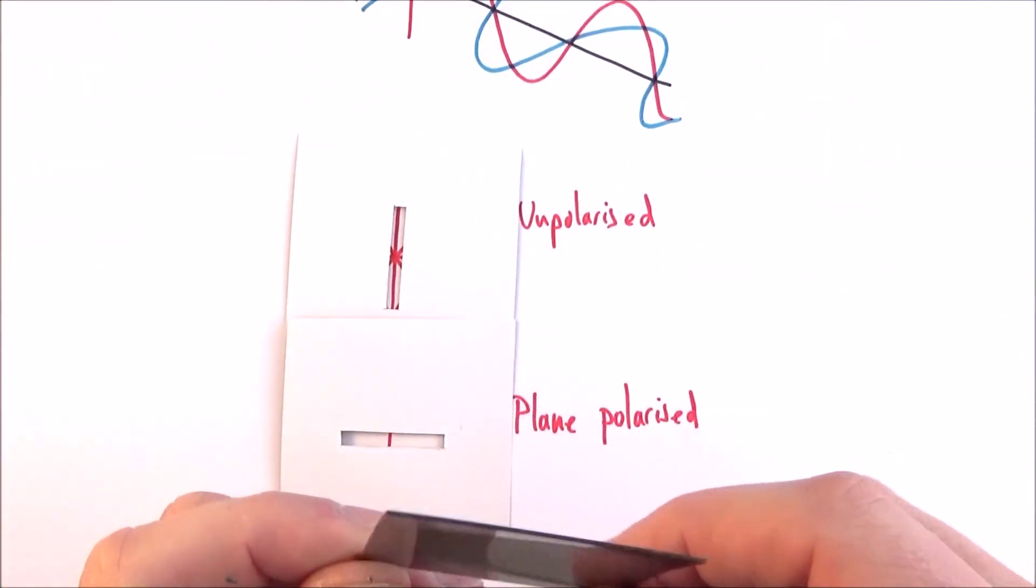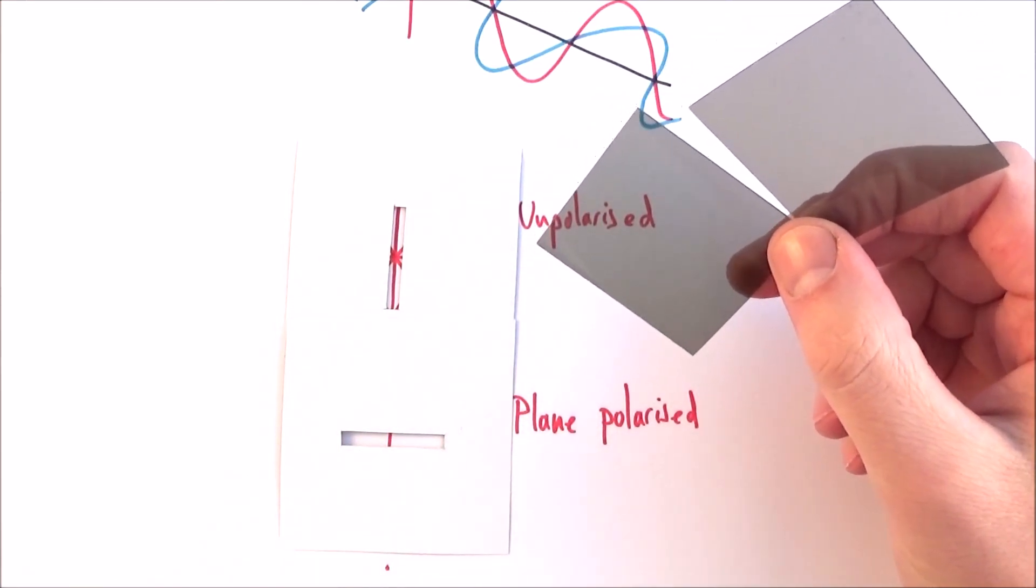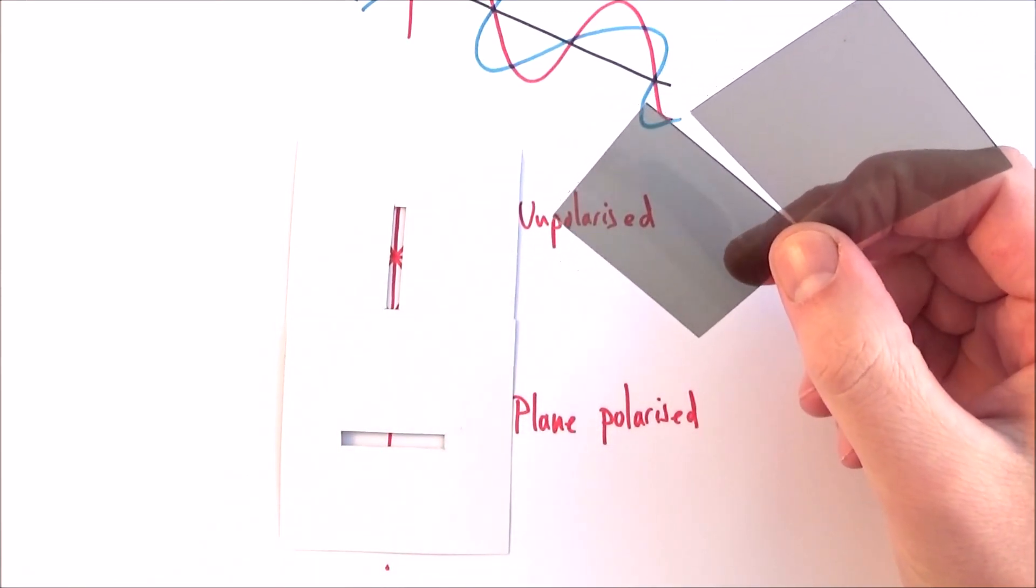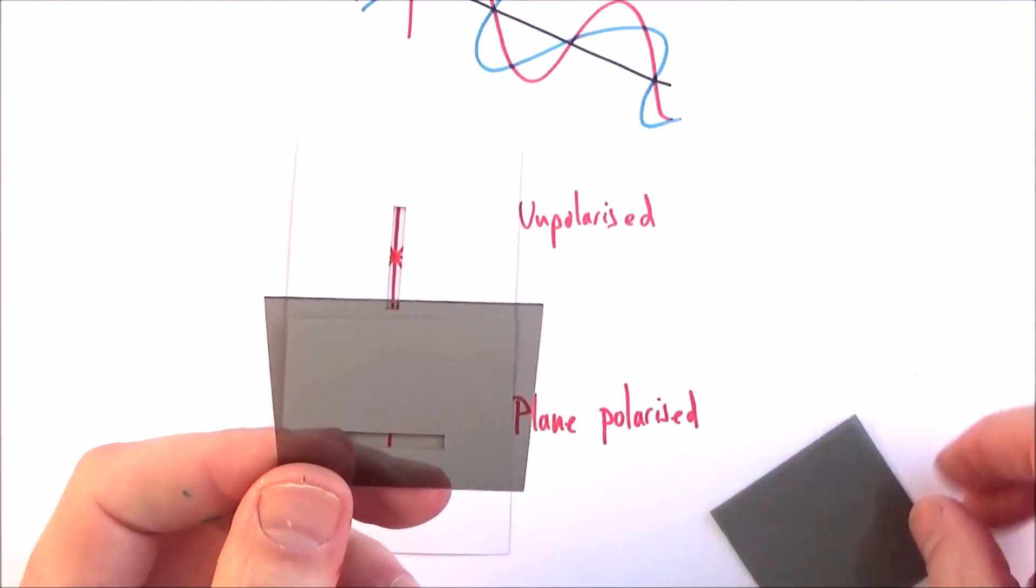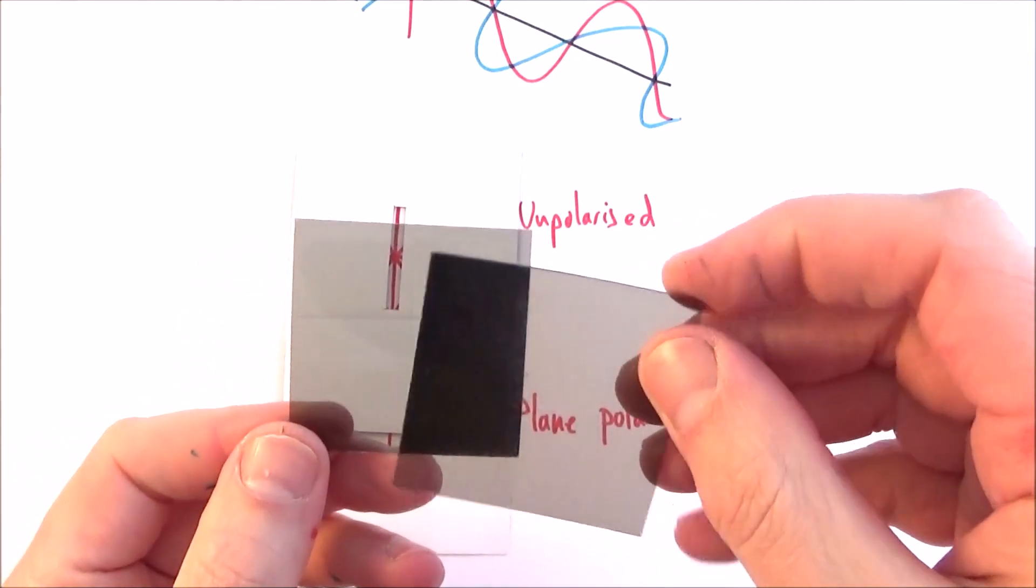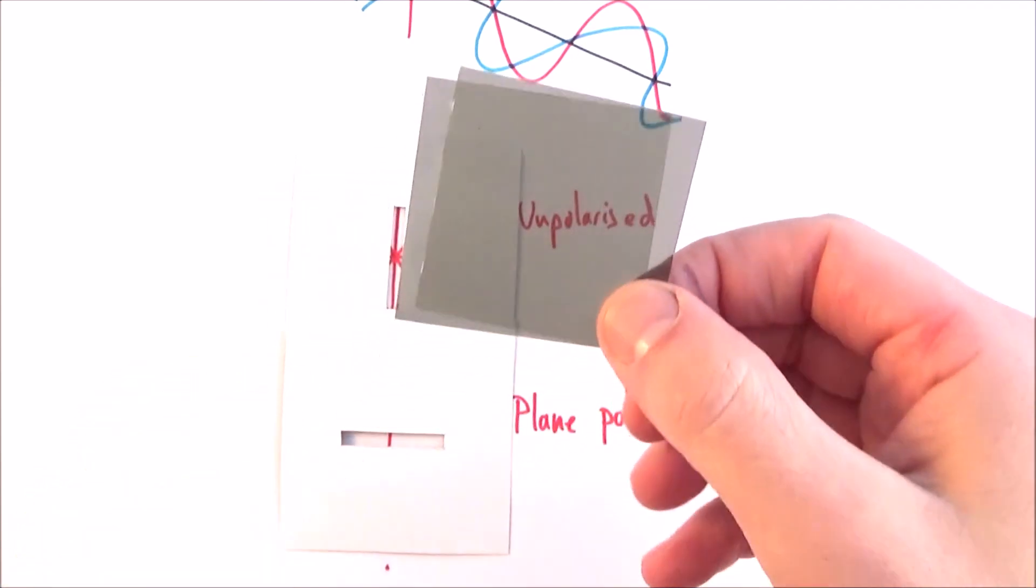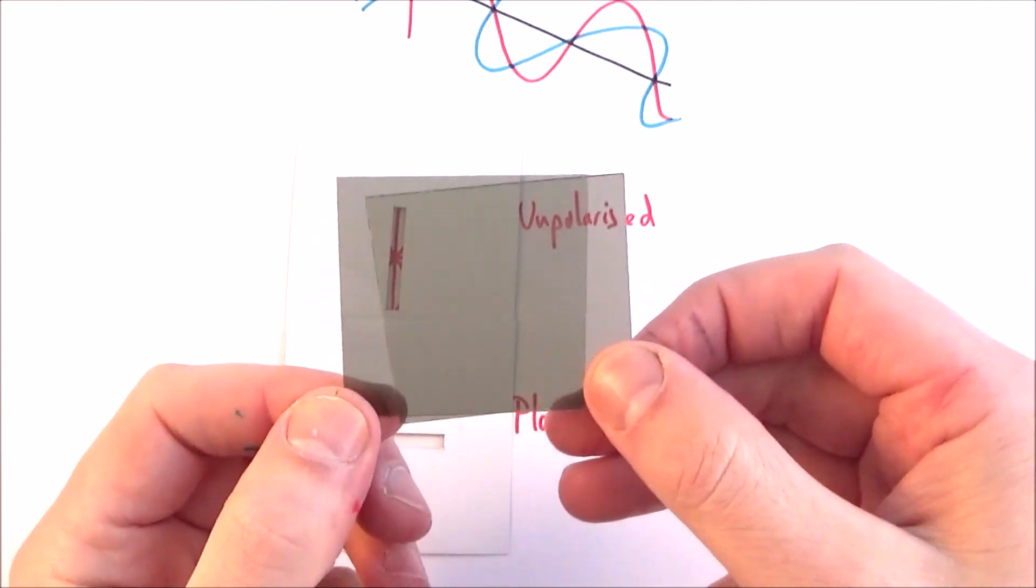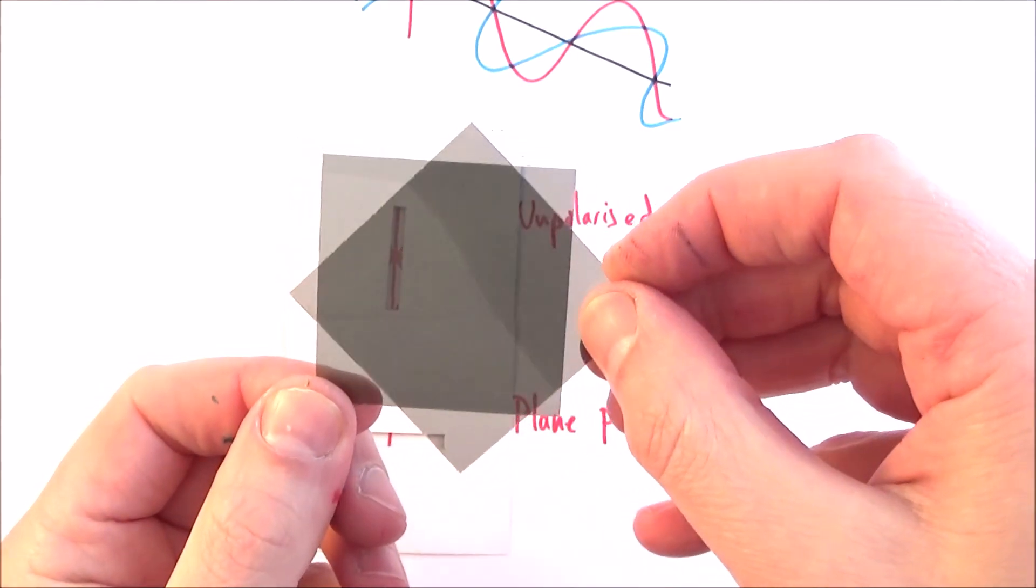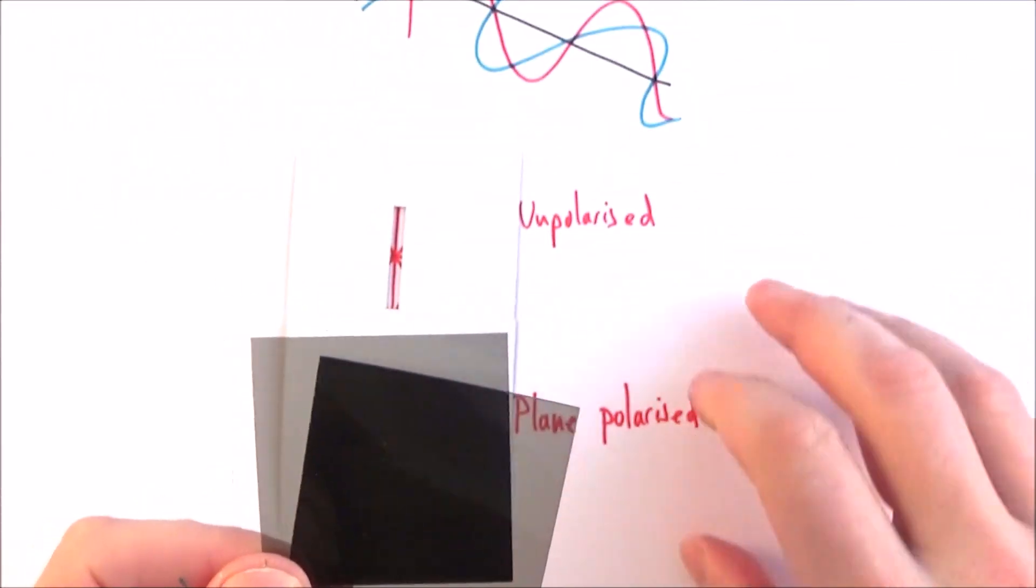We can use a couple of pieces of polaroid, which is basically nitrocellulose with small crystals of quinine iodosulfate. When they absorb light, they only emit light that is plane polarized. If we have two filters perfectly in line vertically, it lets about 50% of the light through. As I rotate them, less and less light gets through until, at 90 degrees, none of the light gets through.